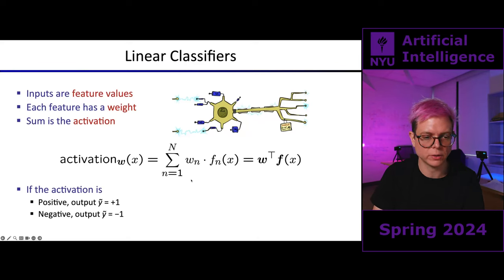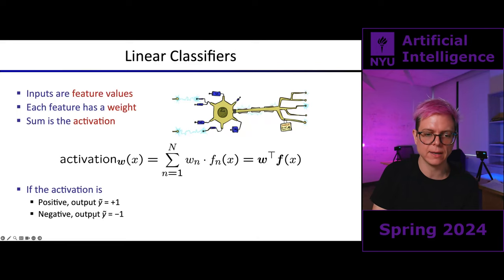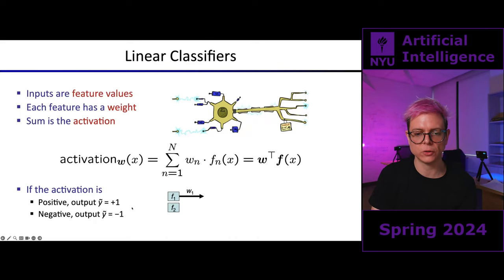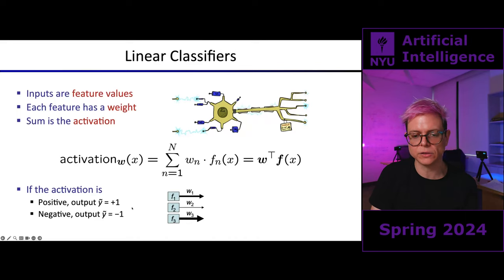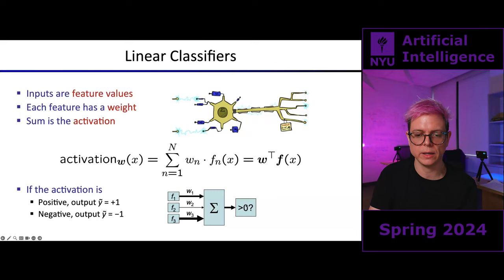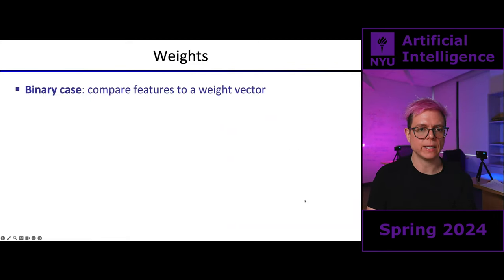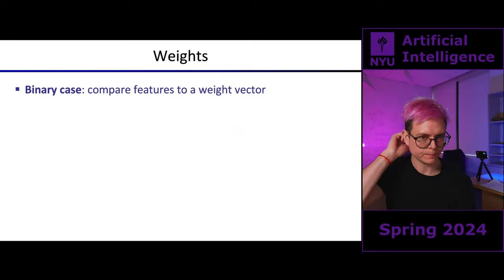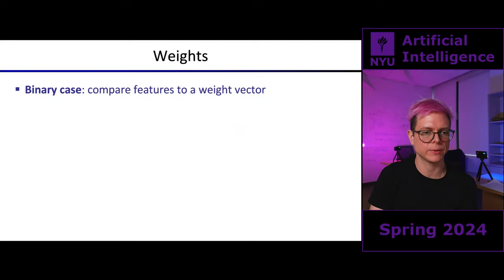If the linear activation is positive, my system will output +1. If my activation is negative, my system will output −1. For example, feature 1 is weighted by weight 1, feature 2 by a smaller weight 2, feature 3 by a large weight 3. How can I ignore a feature? Set its weight to zero. So I have features weighted by a factor, I sum them up, check whether it's larger than zero, and output the corresponding sign.